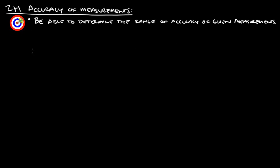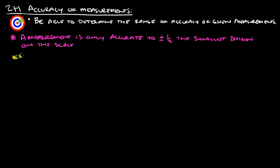Basically, what you have to know is that a measurement is only as accurate to plus or minus half the smallest division on the scale. For example, if you received a measurement that said something was 37 feet long, the smallest division of the scale is to the nearest foot, so the accuracy of the measurement would be assumed to be within half a foot of 37 feet.